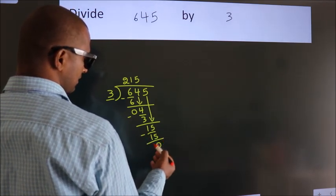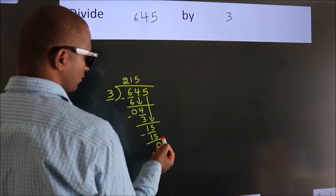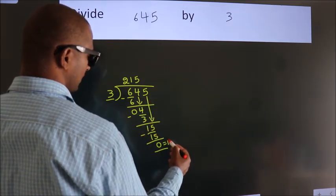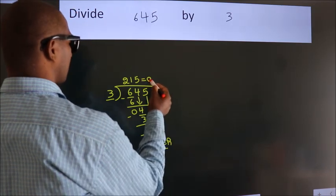After this, no more numbers to bring it down. So, we stop here. This is our remainder. This is our quotient.